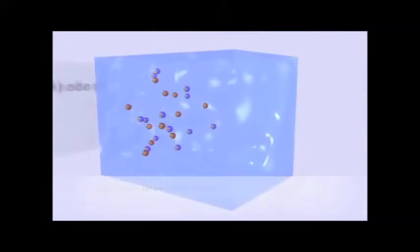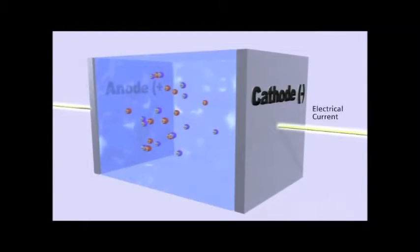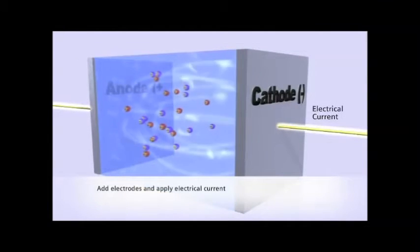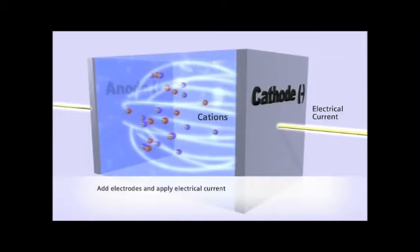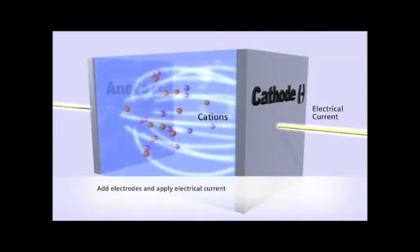When a pair of electrodes is inserted and an electrical current applied, the electric field drives the cations in the direction of the cathode, and at the same time drives the anions in the opposite direction toward the anode.